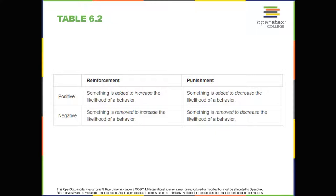A secondary reinforcer has no inherent value and only has reinforcing qualities when linked with a primary reinforcer. Praise, linked to affection, is one example of a secondary reinforcer, as when you called out great shot every time Joaquin made a goal. Another example, money, is only worth something when you can use it to buy other things. Either things that satisfy basic needs, like food, water, and shelter, which are all primary reinforcers, or other secondary reinforcers.